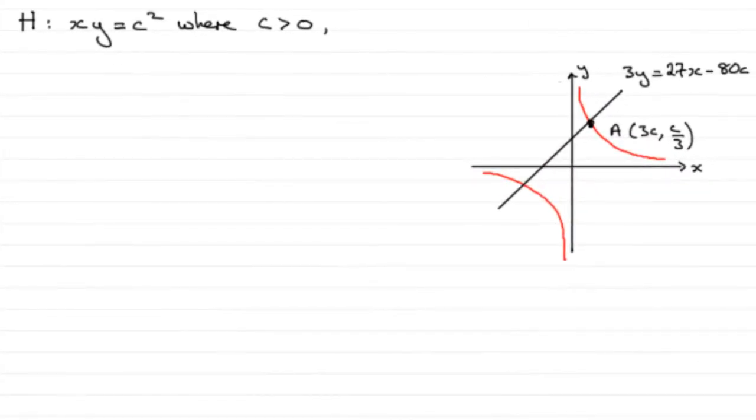So for this last part then, we've got to find out where the equation of this normal, where the line intersects the curve again at a point B. Find the coordinates of B.